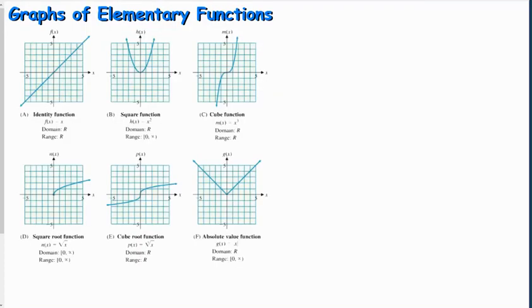So here are your graphs of the elementary functions. You see the identity function is a line through the origin with slope one, and the square function is your basic parabola. Your cube function is your basic s-shaped graph. The square root function is half of a parabola on its side. The cube root function is the cube function on its side. And the absolute value function is a v-shaped graph.